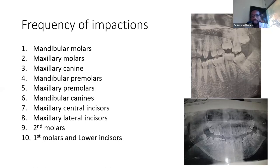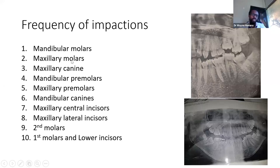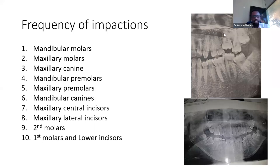Impactions can occur for any tooth — maxillary incisor, mandibular incisor, premolar. But ranked in terms of frequency, the mandibular third molar is the most commonly impacted tooth, three times more than the maxillary molar which is ranked number two, followed by canines and so forth. The least commonly impacted tooth is the first molar because it has no succeeding deciduous tooth, so its eruption pathway faces less resistance — though I actually saw a case of an impacted first molar today.